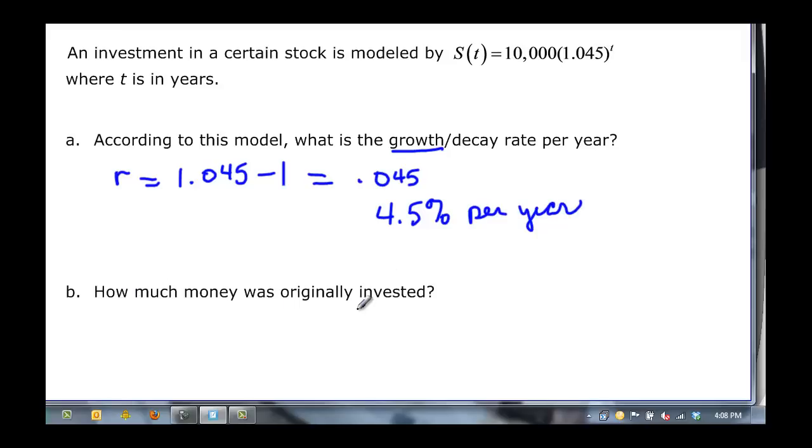And then it asks how much money was originally invested. The coefficient a before the base is going to be our original amount. So there was $10,000 invested.